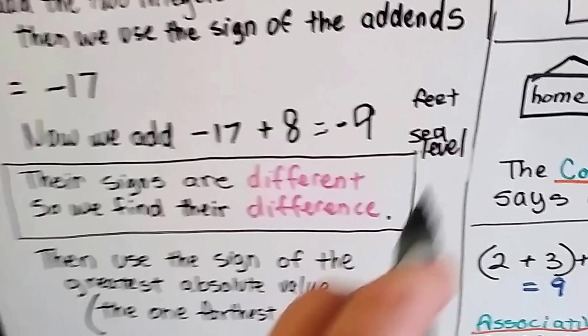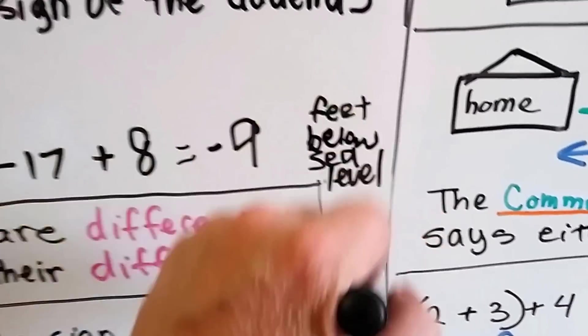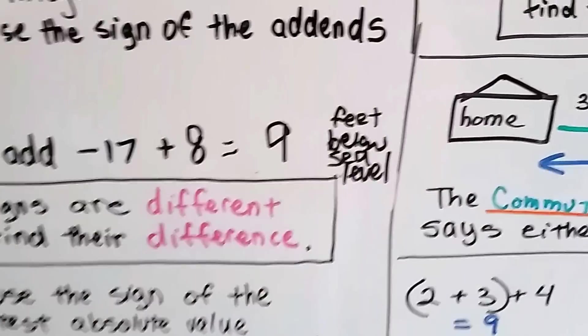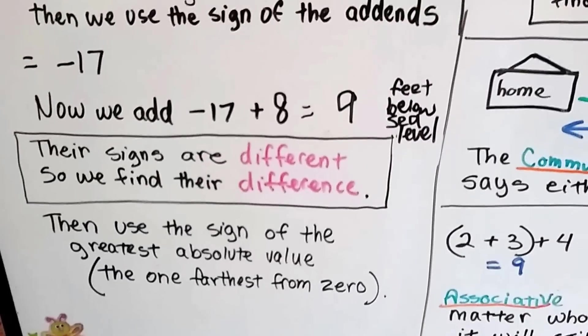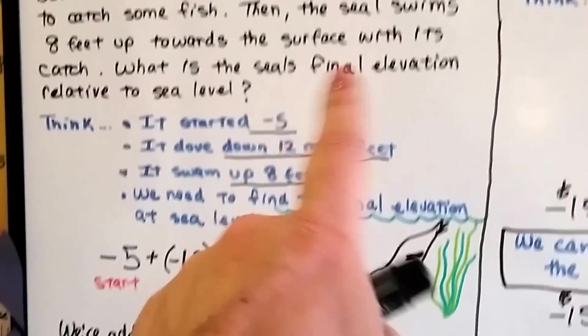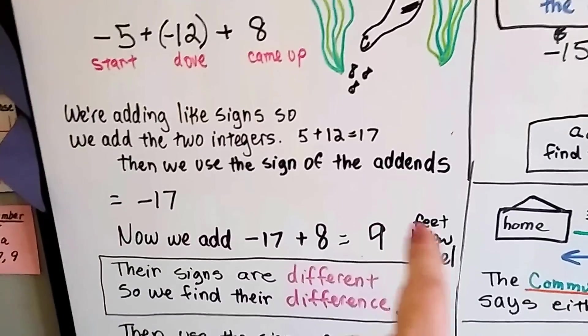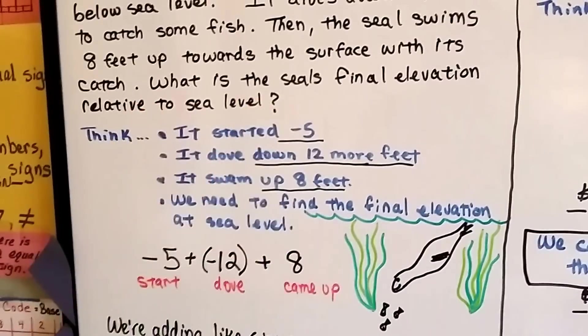It's negative 9 feet below sea level. And because we put the word below here, we don't need the negative 9. He's just 9 feet below sea level. That's like saying negative. What is the seal's final elevation relative to sea level? That's why we had to answer it that way. So you've got to make sure you read the question and make sure you're actually answering what it's asking.